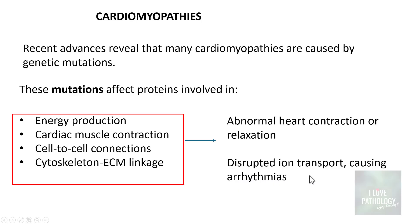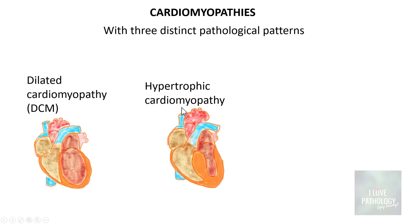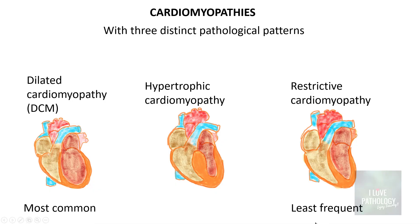There are three distinct pathological patterns of cardiomyopathies. One is dilated cardiomyopathy, second is hypertrophic cardiomyopathy, and third is restrictive cardiomyopathy. Dilated cardiomyopathy is the most common type, whereas restrictive is the least frequent type.